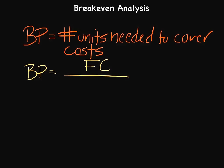If I sell nothing, I still have to pay utilities, the lease for the property I'm using, certain insurance costs, and advertising. So they don't vary based upon production. I take my fixed costs and divide that by my price — whatever the selling price is for my product, what consumers have to give up to obtain it — less what we call variable costs, which I'll abbreviate as VC.